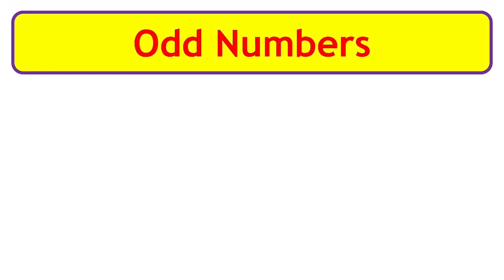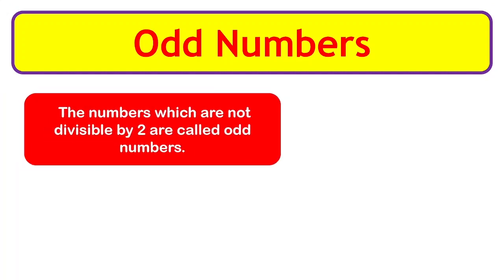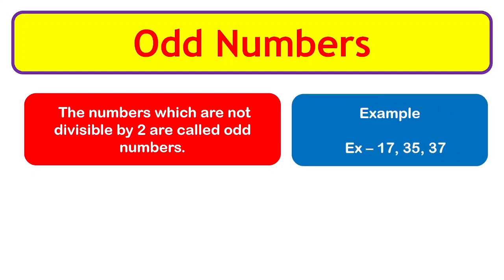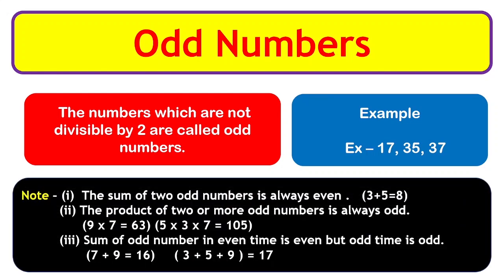Odd numbers: the numbers which are not divisible by 2 are called odd numbers. Examples: 17, 35, 37. Notes: the sum of two odd numbers is always even — for example, 3 plus 5 equals 8, which is even. The product of two or more odd numbers is always odd — for example, 9 multiplied by 7 equals 63, which is odd.